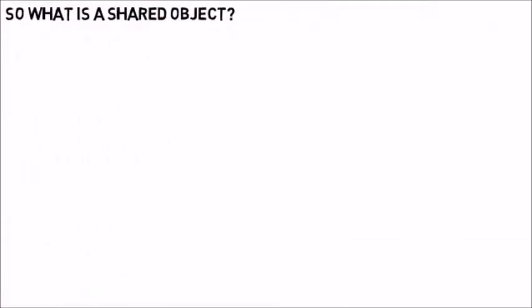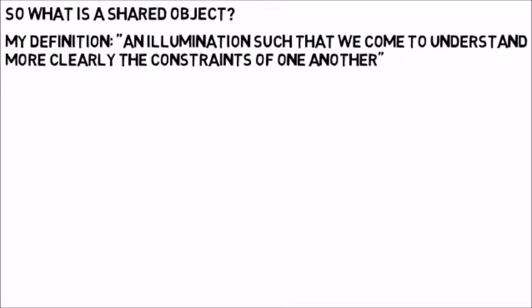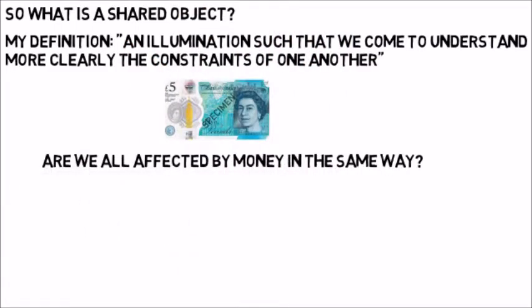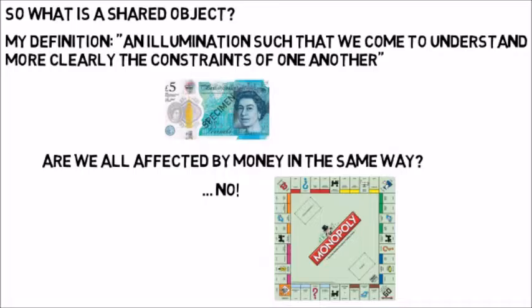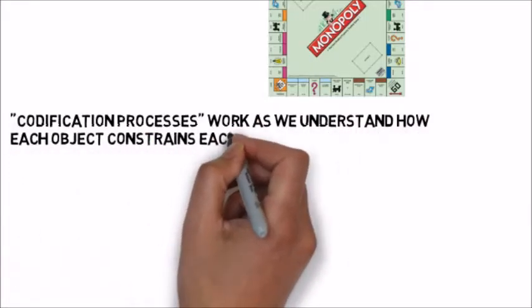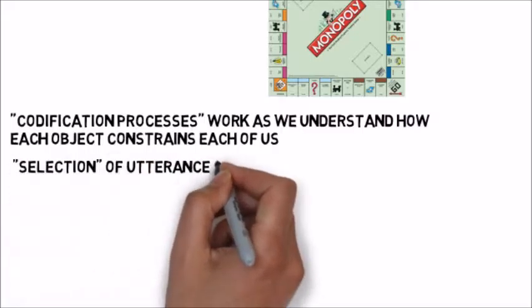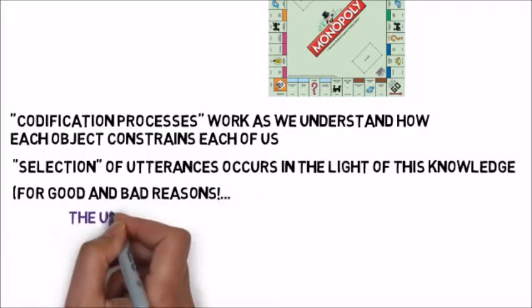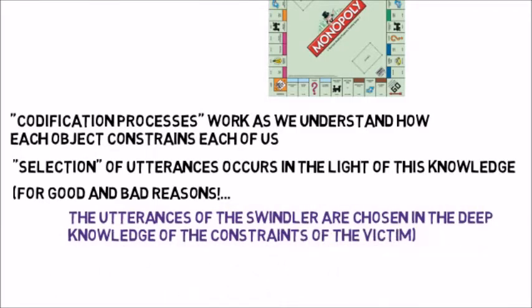So in the codification process, what we see is an emerging awareness of the contours of constraint of each other. Shared objects are illuminating of our constraints. Now you might reasonably say, well, there are objects which are clearly codifications of expectation — for example, money. Surely money constrains everybody in the same way. But actually this doesn't appear to be the case, and you only have to play somebody at Monopoly to see that money affects people in different ways. And indeed, capitalism and the distinctions it makes between people seem to rely on this. So I'm arguing that codification isn't constriction, but the demarcation of constraint. As a result of the increasing awareness of constraints, utterances are indeed selected, but the motivation behind those selections can be good or bad. A good example is that the utterances of a swindler are chosen in deep knowledge of the constraints of the victim.